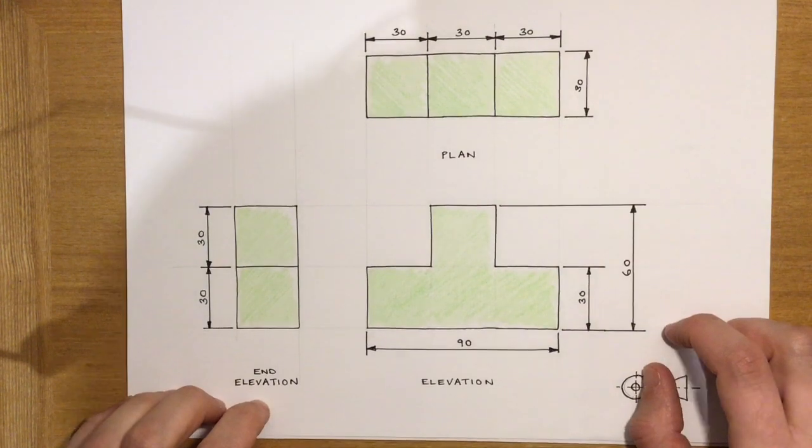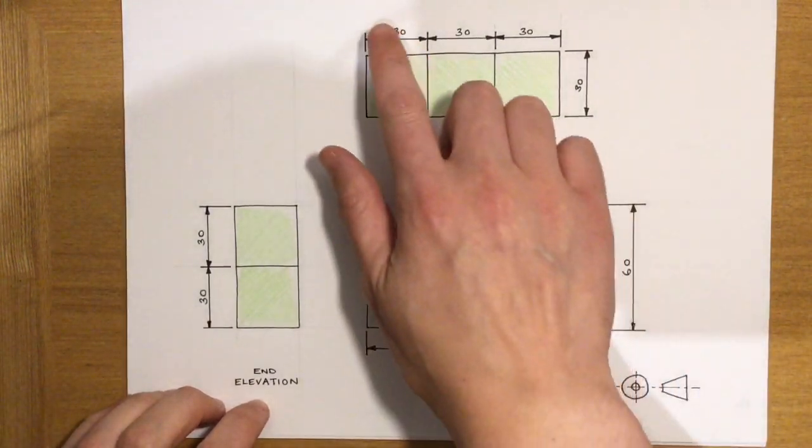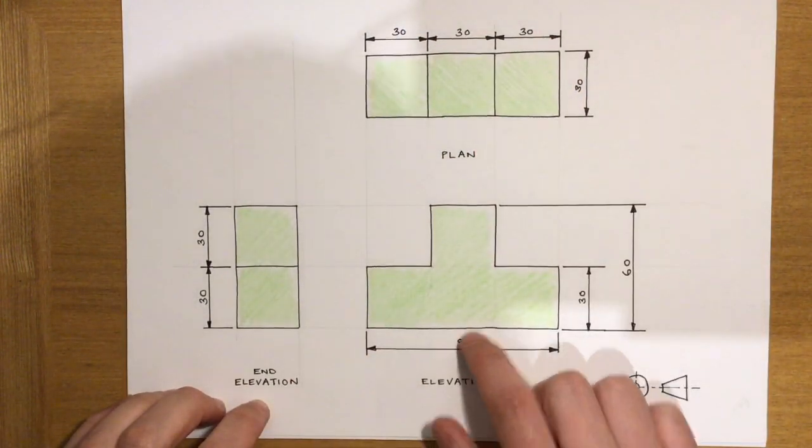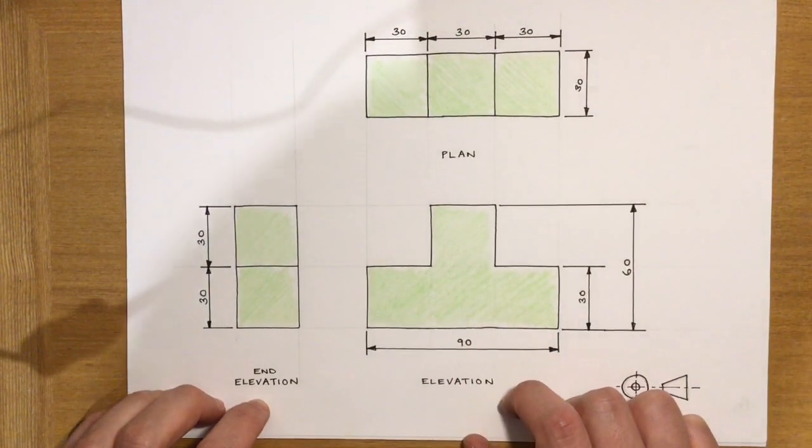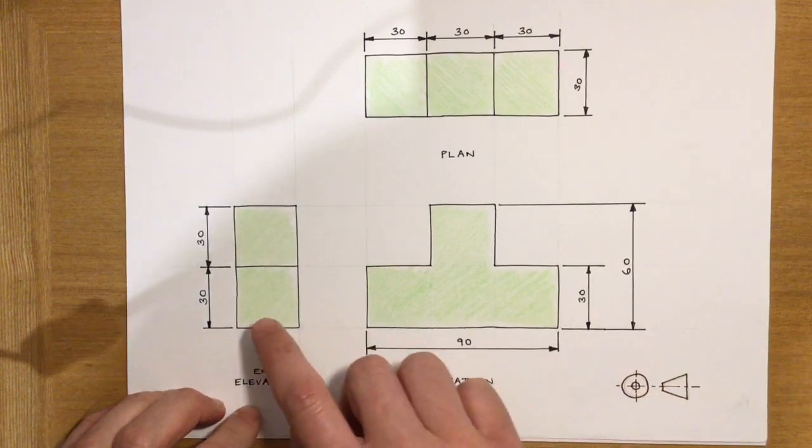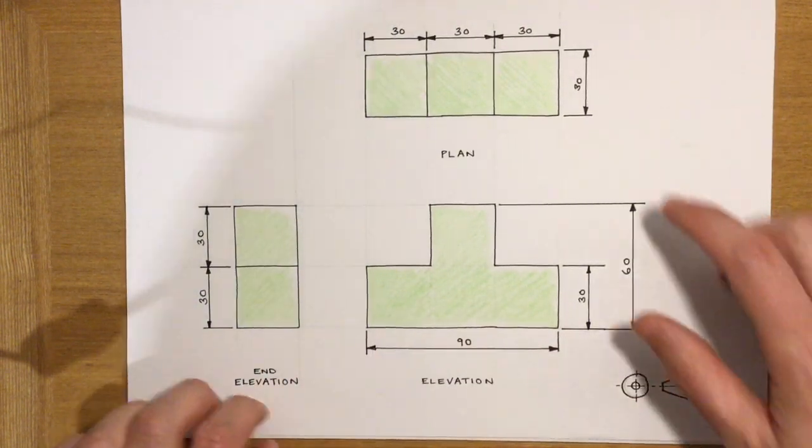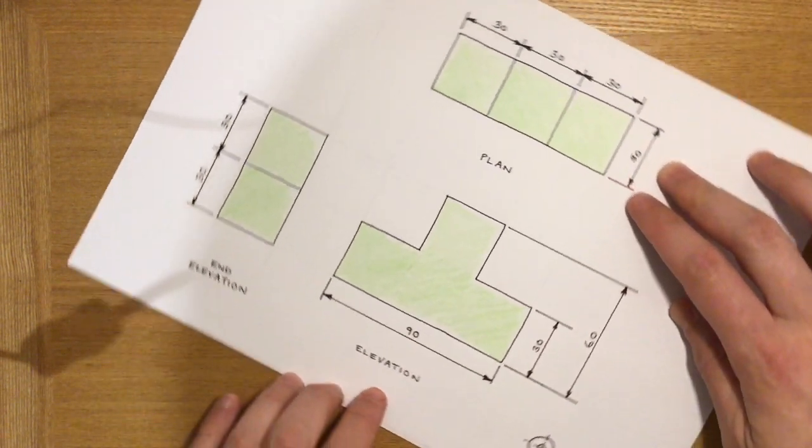Looking now at the dimension values, you'll see that for all the horizontal dimensions they're all positioned on top of the line. So that 30, 30, 30 and the 90 all sit on top of the line and that's because we only ever view a page in landscape the way it is just now or by rotating it around 90 degrees to the right.